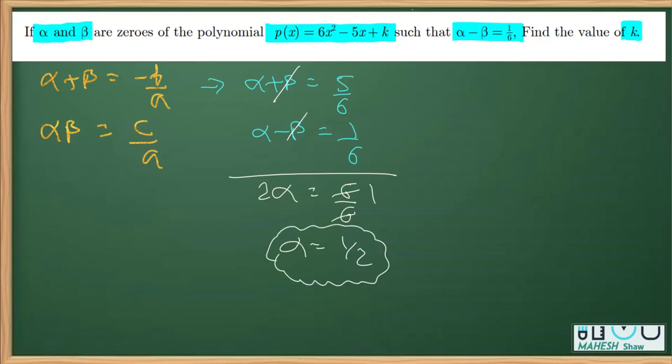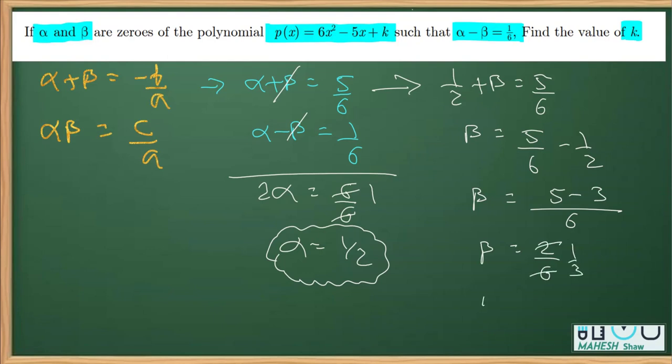Now we got the value of alpha. If we place the value of alpha in the first equation as 1 by 2 plus beta equals 5 by 6, then beta is 5 by 6 minus half. Taking LCM as 6, this is 5 and 3, so beta comes out to be 2 over 6 which reduces to 1 by 3.